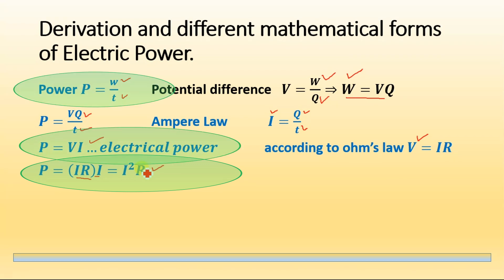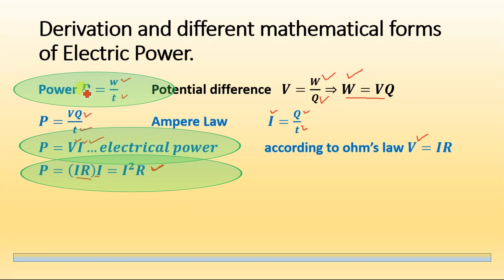All three equations are equally valid for calculating electric power in a DC circuit. Which one to use depends on the known quantities: if current and resistance are given, use P = I²R; if voltage and current are given, use P = VI; and if work done and time are given, use P = W/T.